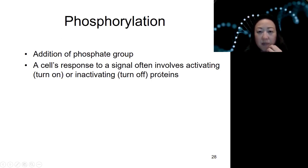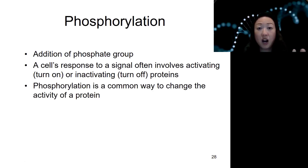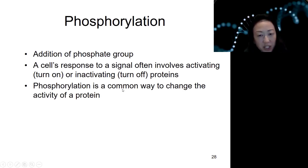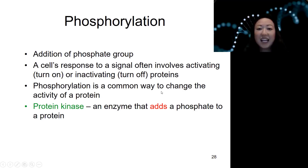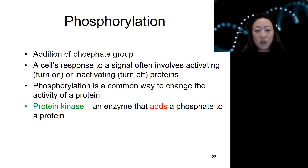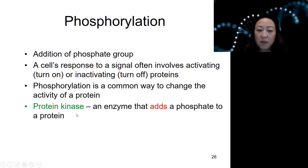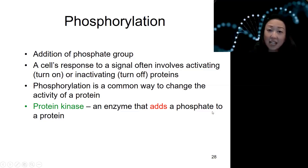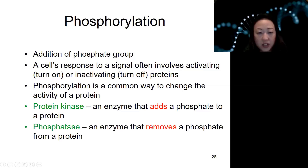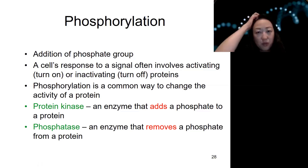Phosphorylation is a common way to change the activity of a protein. There's a name for the enzyme that adds phosphate onto another protein — it's called kinase. Protein kinase adds phosphate onto a protein. If you have something that adds phosphate, you also need another protein that takes it off — that's called phosphatase. Kinase adds phosphate; phosphatase removes phosphate.